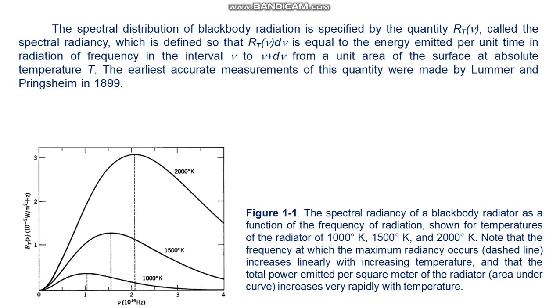They used an instrument essentially similar to the prism spectrometer used in imaging optical spectra, except that special materials were required for the lenses, prisms, etc., so that they would be transparent to the relatively low frequency thermal radiation. The experimentally observed dependence of R_T(ν) on ν and T is shown in figure 1.1.